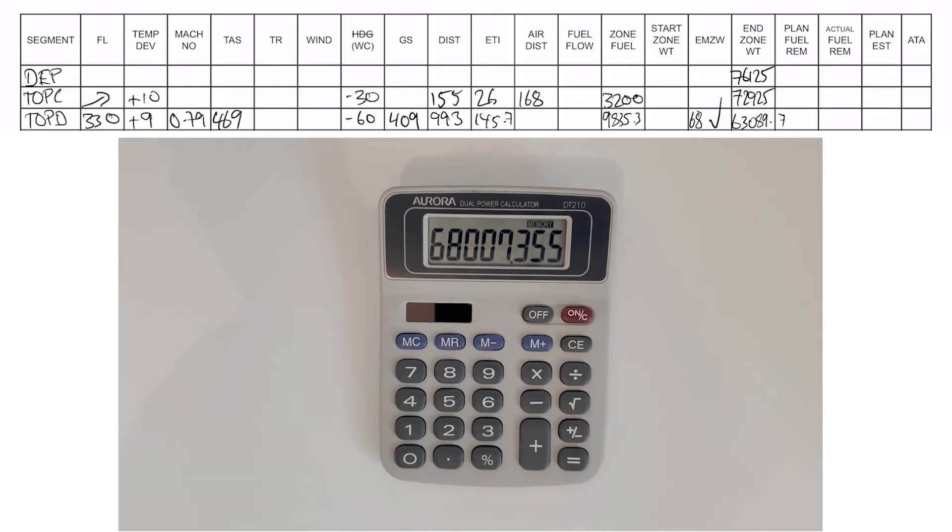And that's the cruise leg done. Notice how we didn't have to type in any additional numbers on the calculator. We're not clearing the zone fuel and typing it back in. We're taking advantage of the zone fuel in the calculator to work out the end zone, and then we add the start zone back on to work out the estimated mid-zone. This is the most efficient and most accurate way to do it.